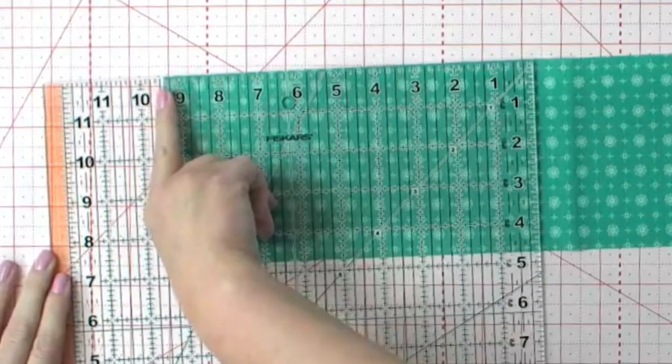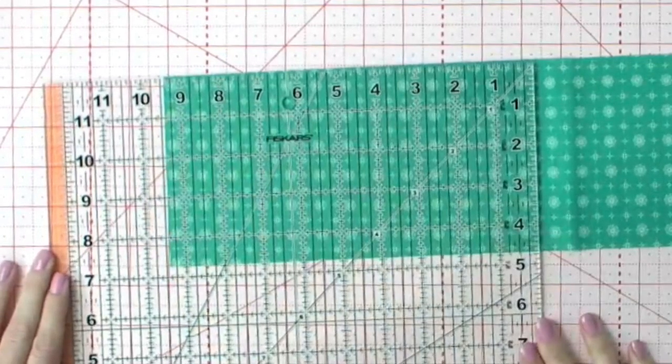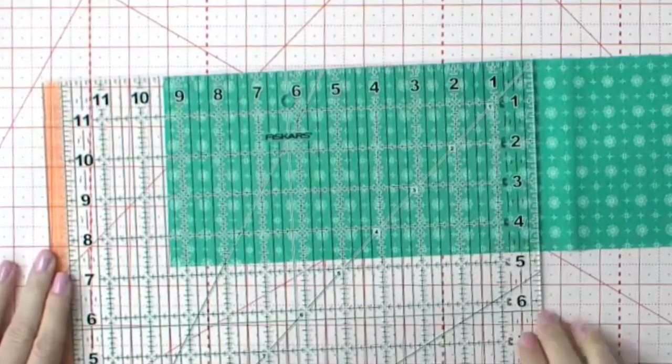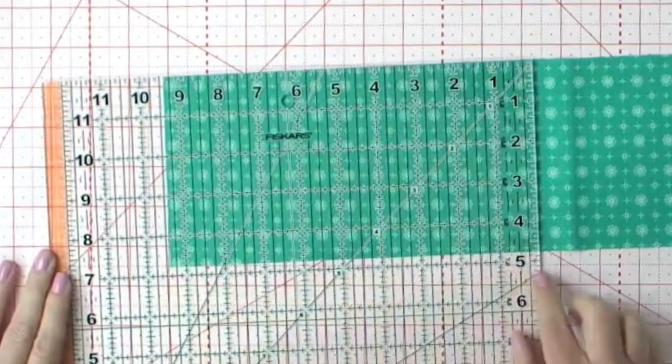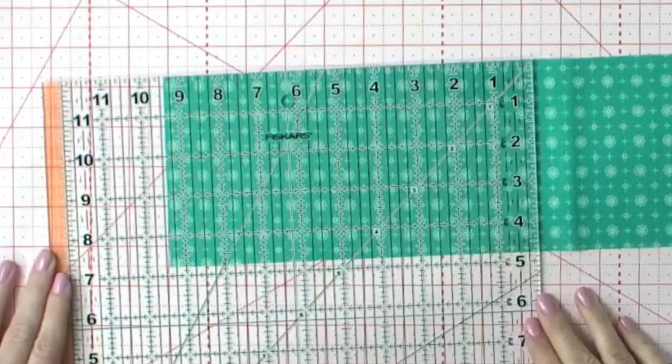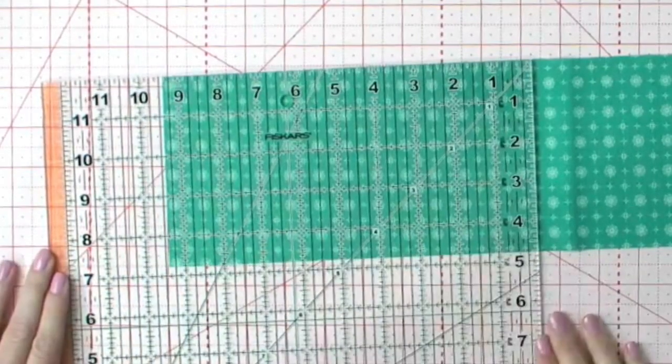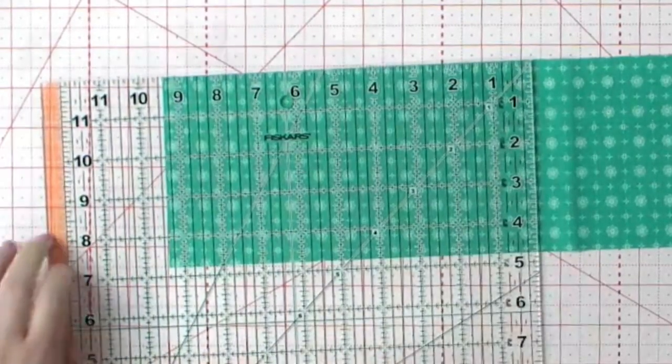I'm going to make sure that this is lined up here perpendicularly with a line going horizontally and vertically here with the nine and three-eighths before I make this cut.